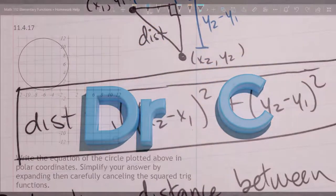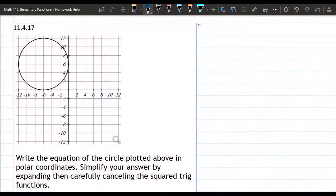We have a circle here that's graphed. The first thing we're going to need is the Cartesian equation for a circle. So if we have a circle with center at h, k and radius r, we have the equation x minus h squared plus y minus k squared equals r squared.